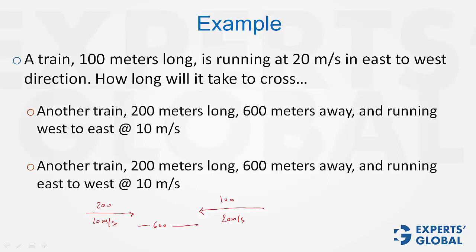It's about crossing, and therefore the total distance to be covered is 600 plus 200 plus 100, which equals 900 meters. The speed would be the sum of the two speeds because they are moving in opposite directions. So 20 plus 10 equals 30 meters per second, giving us 30 seconds.